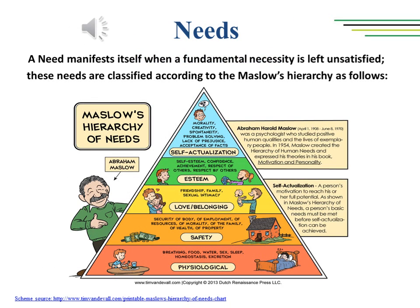A need manifests itself when a fundamental necessity is left unsatisfied. These needs are classified according to Maslow's hierarchy, as the scheme shows us. According to American psychologist Abraham Maslow, the human needs can be portrayed in the shape of a pyramid with the largest, most fundamental levels of needs at the bottom and the need for self-actualization at the top.